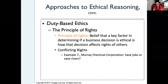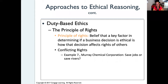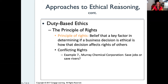Sometimes there are conflicting rights. The example in the textbook is Murray Chemical Corporation, which had a dilemma. They had to make a decision, and the decision would have a negative outcome on either the employees or the environment — the rivers. If they stopped what they were doing, they would protect the environment and stop polluting; however, they would also have to lay off people. So whose rights do they think about — their employees or the environment? This is a typical example of an ethical dilemma.